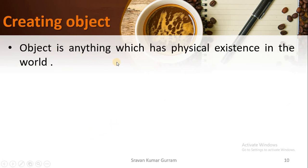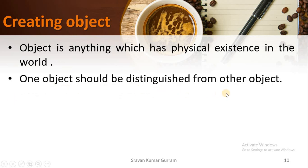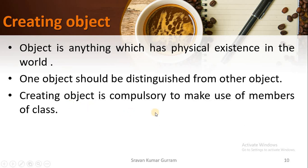An object is anything which has physical existence in the world. If you take a table or a fan, all are called objects because everything has a physical existence. One object should be distinguishable from another object. In our example, we have two objects, Ramu and Raju. Ramu is completely different from Raju because they are two different, distinguishable students. Creating an object is compulsory to make use of the members of a class.